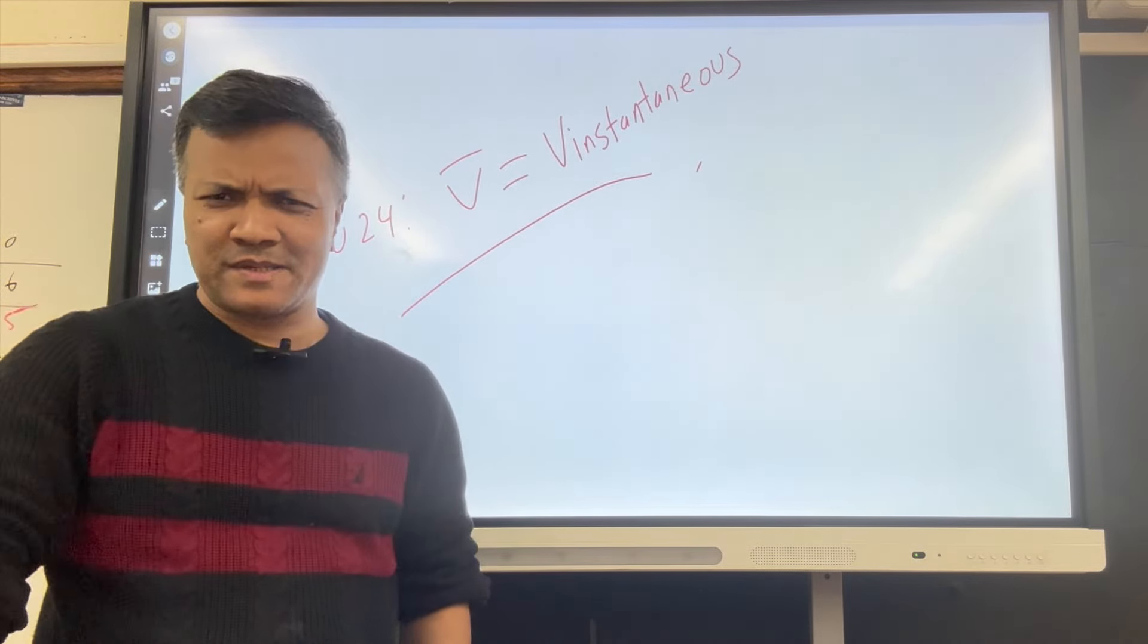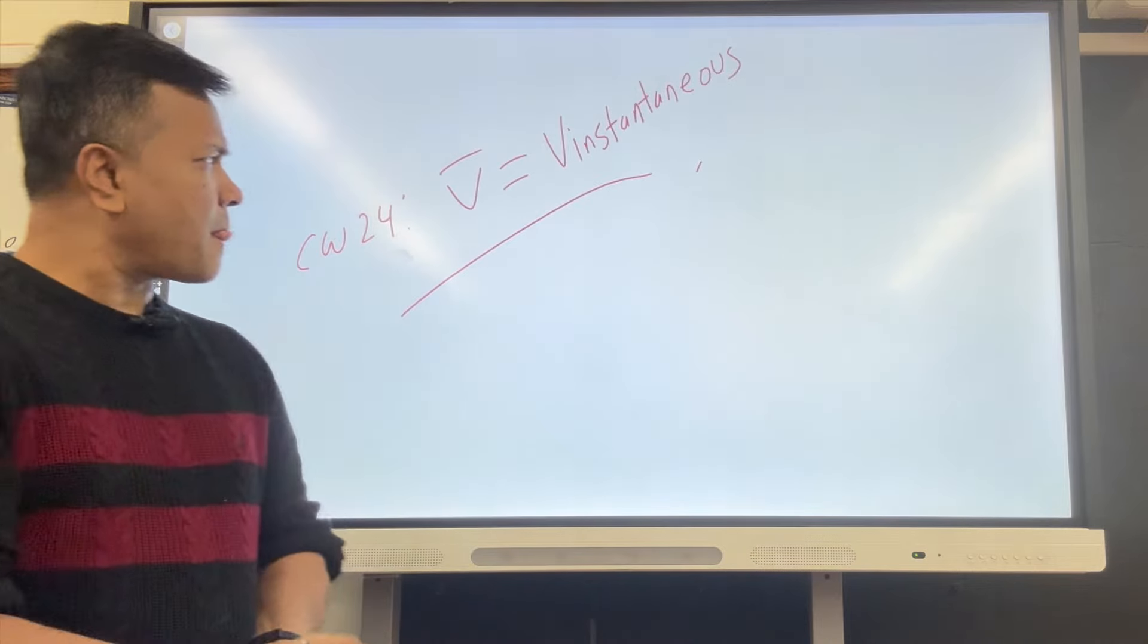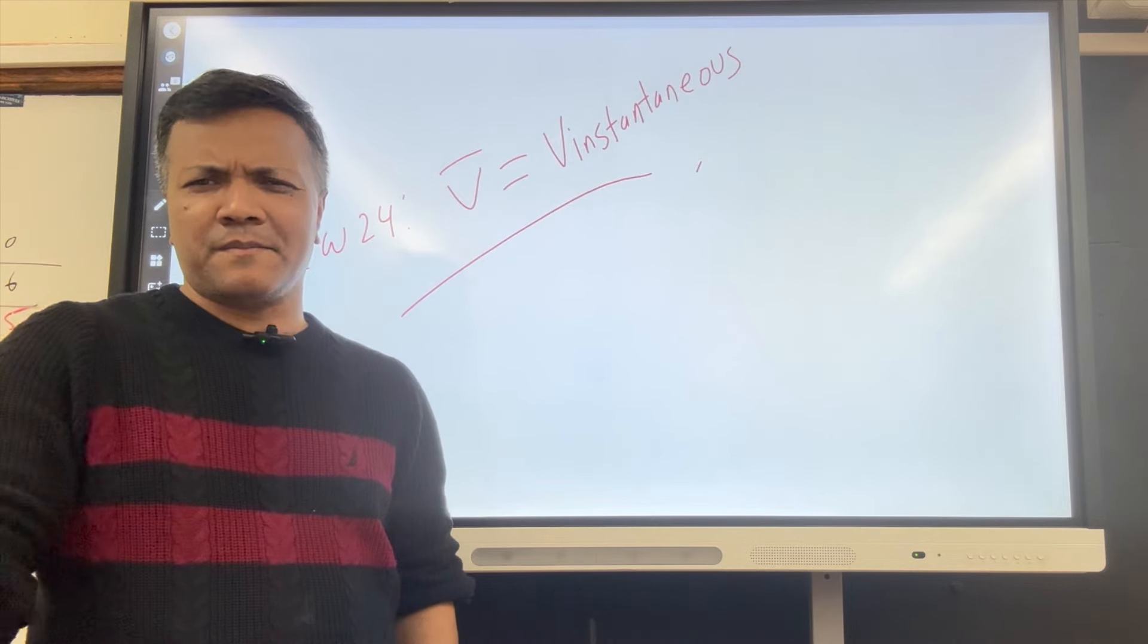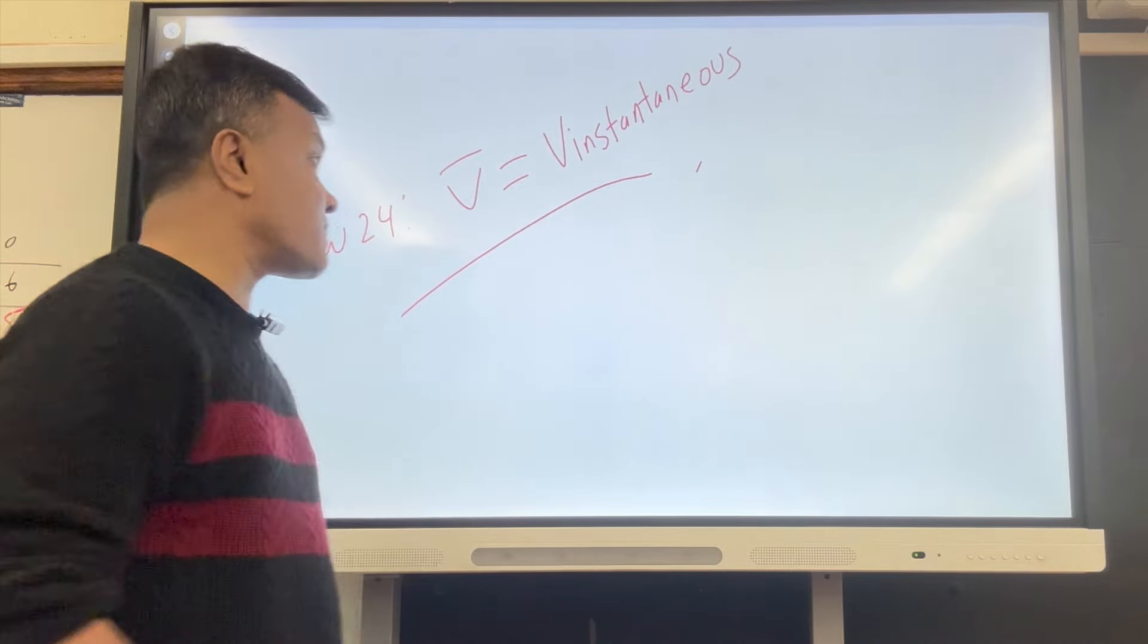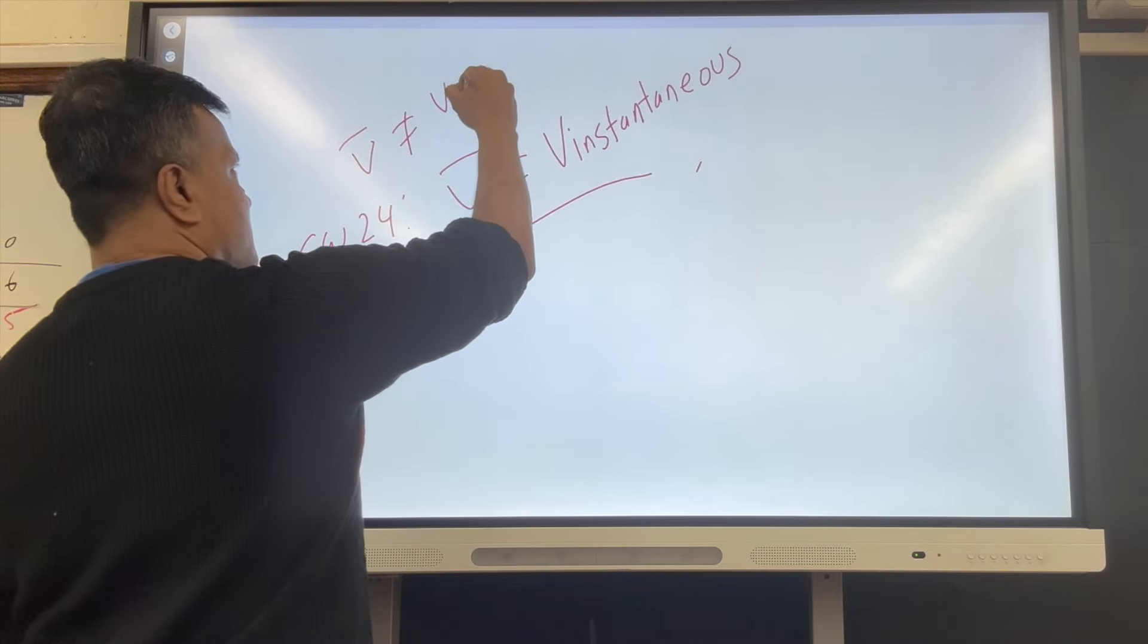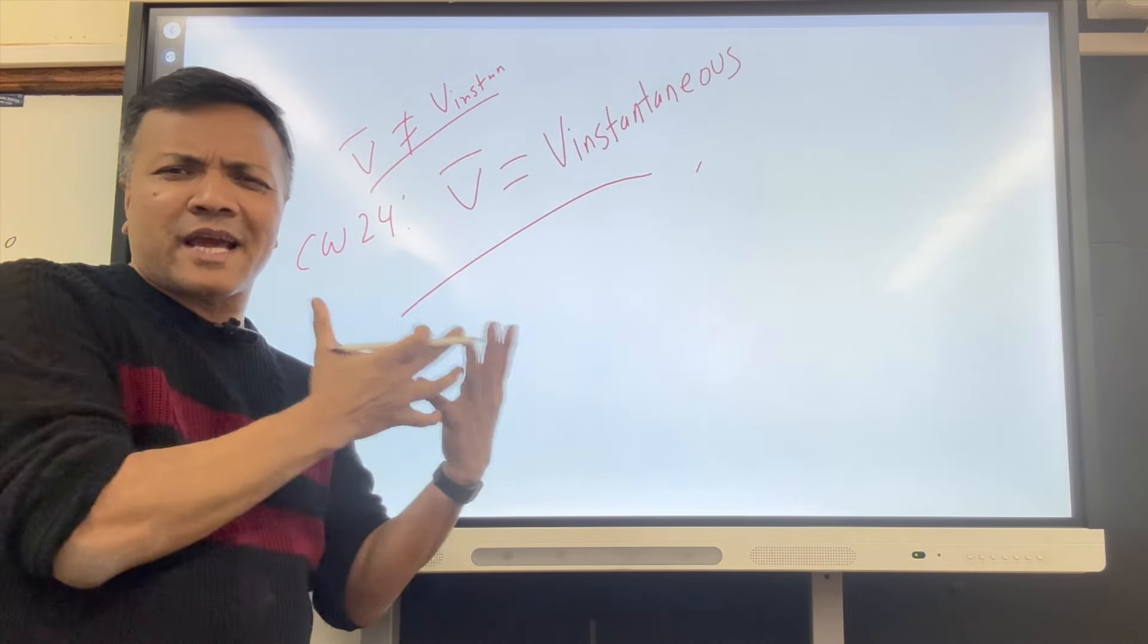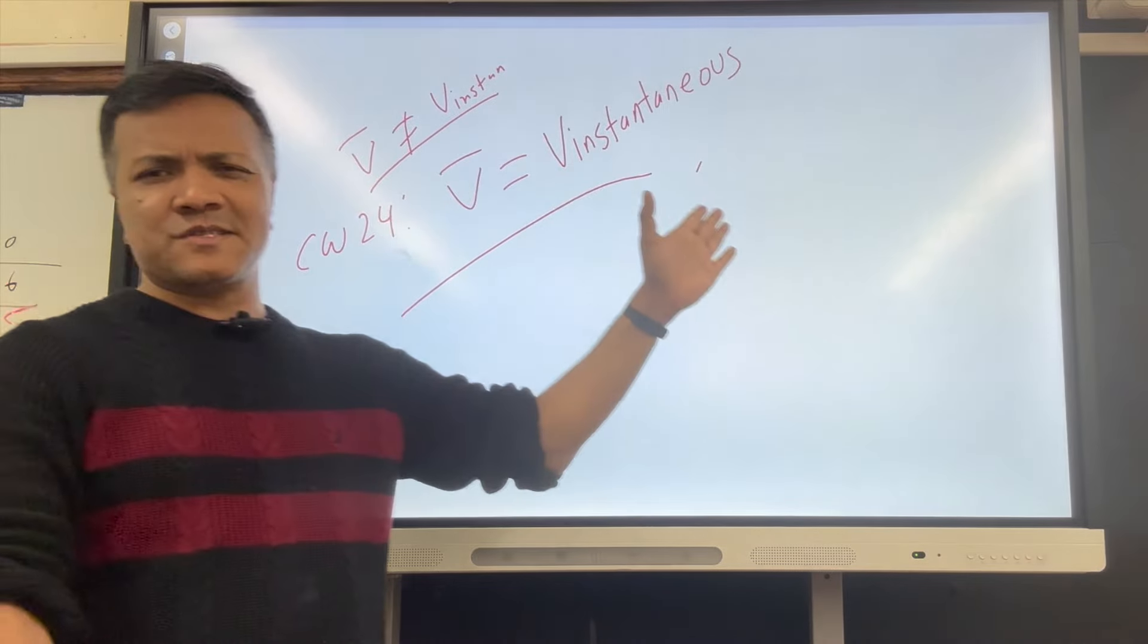In this lesson, I'm going to give you an aha moment, the biggest aha moment in MP1, and that is average velocities vs instantaneous velocity. Last time in classwork number 23, you saw that average velocity was not equal to instantaneous velocity. But at what condition, what technique, what math technique you have to use so that average velocity is becoming instantaneous velocity?